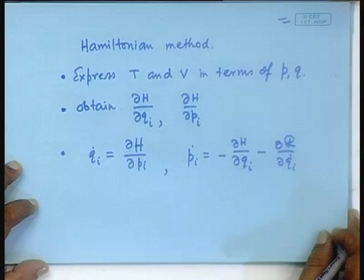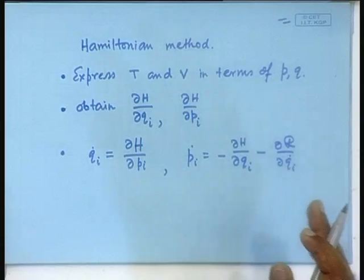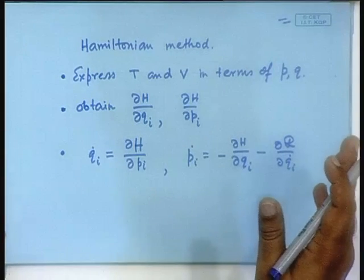So far we have solved problems that are more physics-oriented, and that might erroneously give you the idea that the Lagrangian and Hamiltonian methods are not all that useful in engineering systems. So today let us attack an engineering system right away. Most of you are electrical engineers, so let us do an electrical engineering problem: a DC machine driving a load.